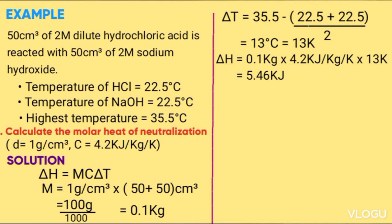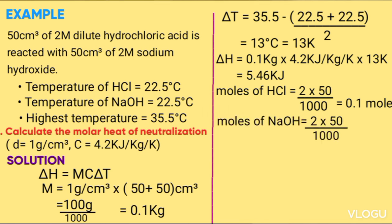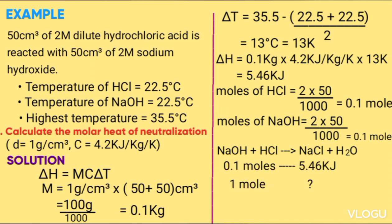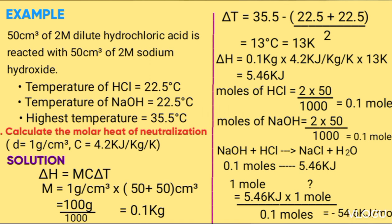Number of moles of hydrochloric acid = molarity × volume/1000 = 2 × 50/1000 = 0.1 moles. Number of moles of sodium hydroxide = 2 × 50/1000 = 0.1 moles. Since the mole ratio is 1:1, the number of moles used is 0.1 moles. Last step: 0.1 moles gives 5.46 kJ, so for 1 mole: 5.46 × 1/0.1 = −54.6 kJ/mol.